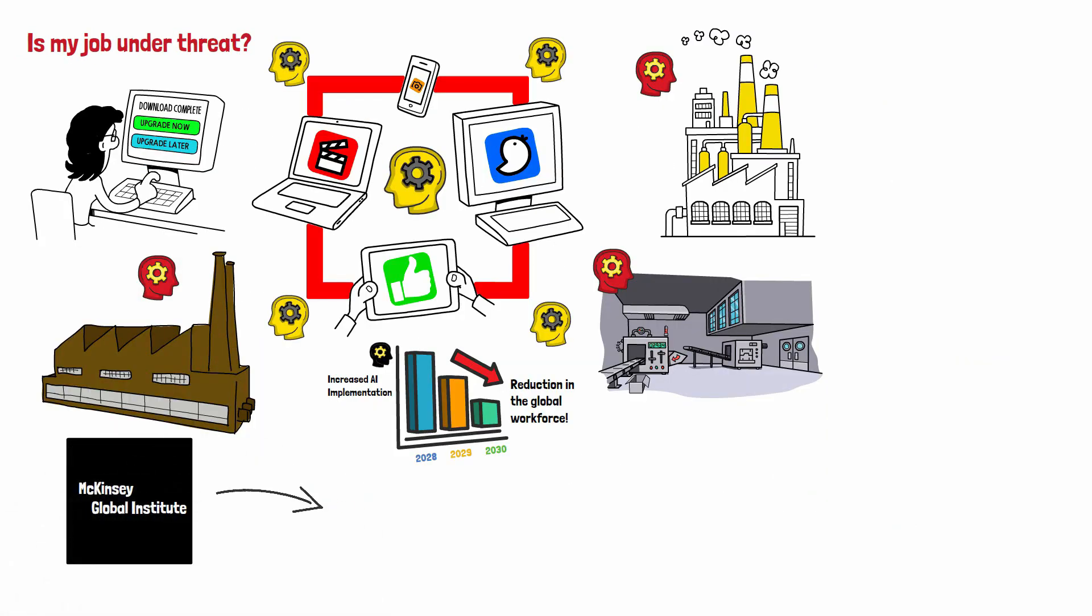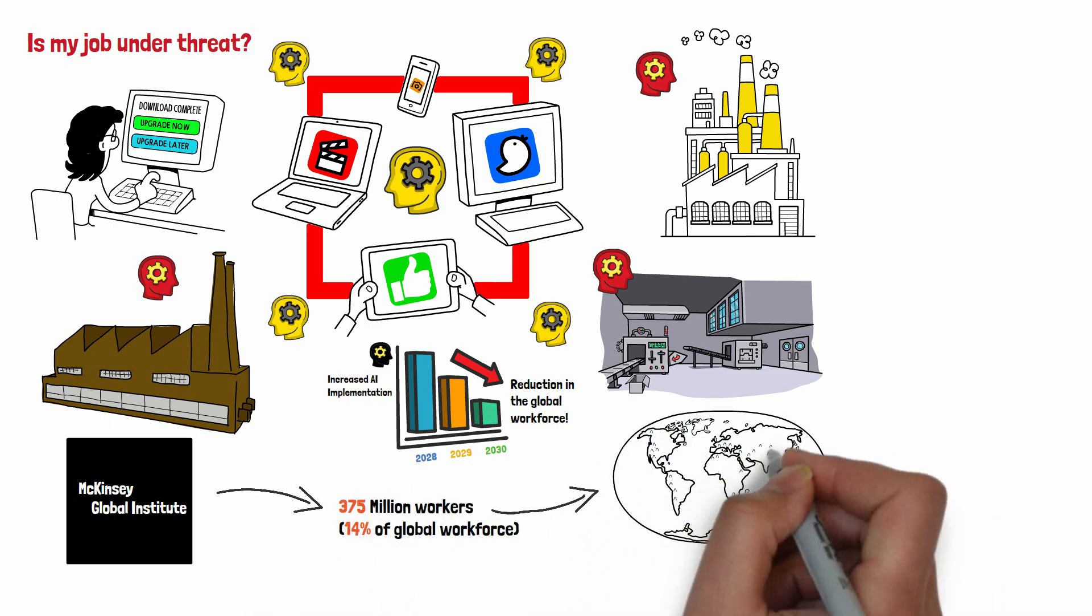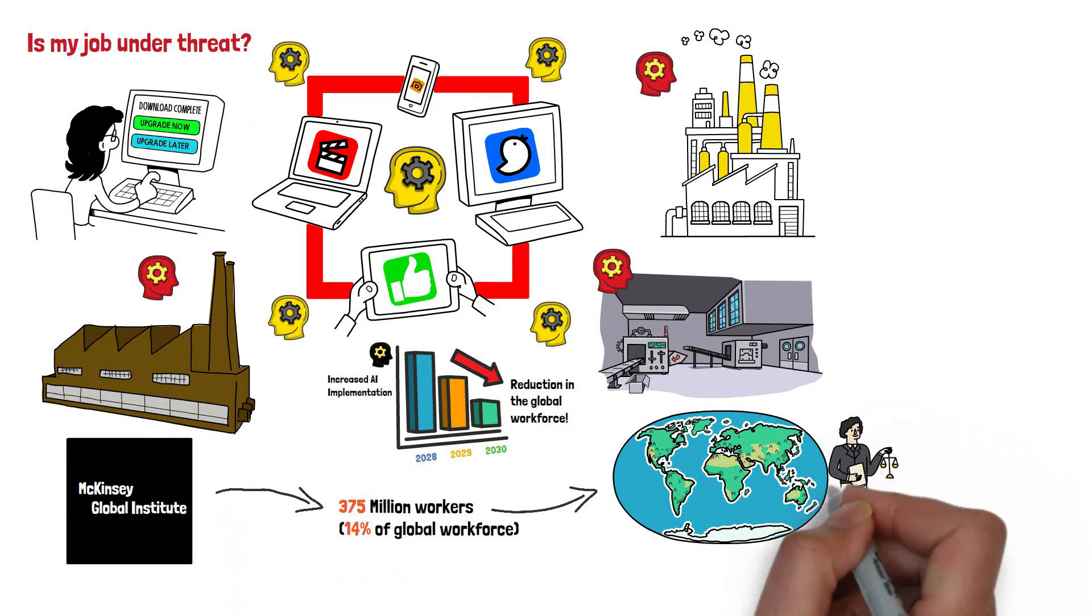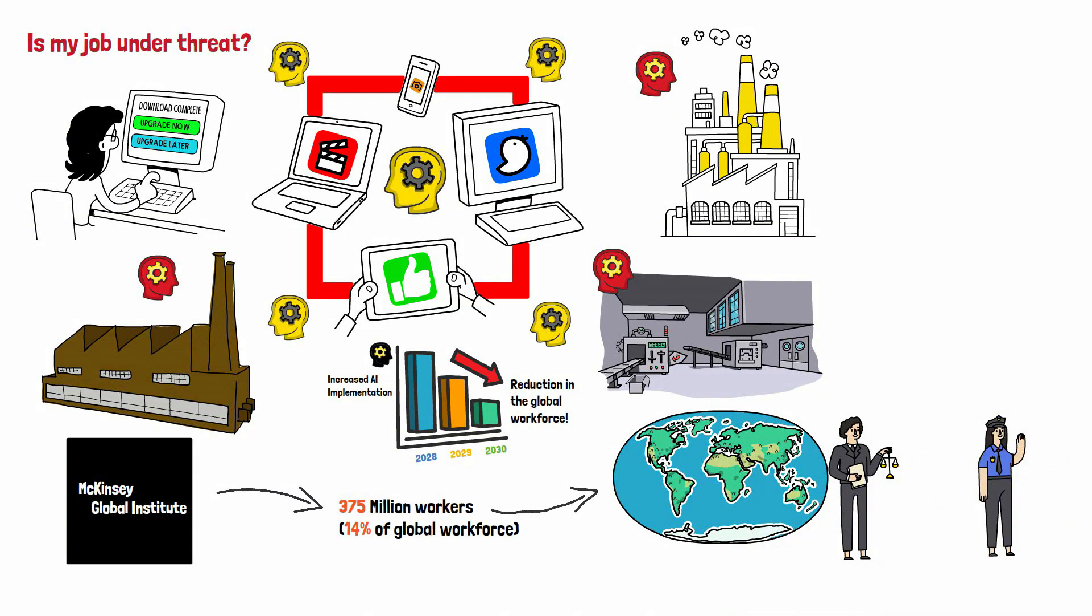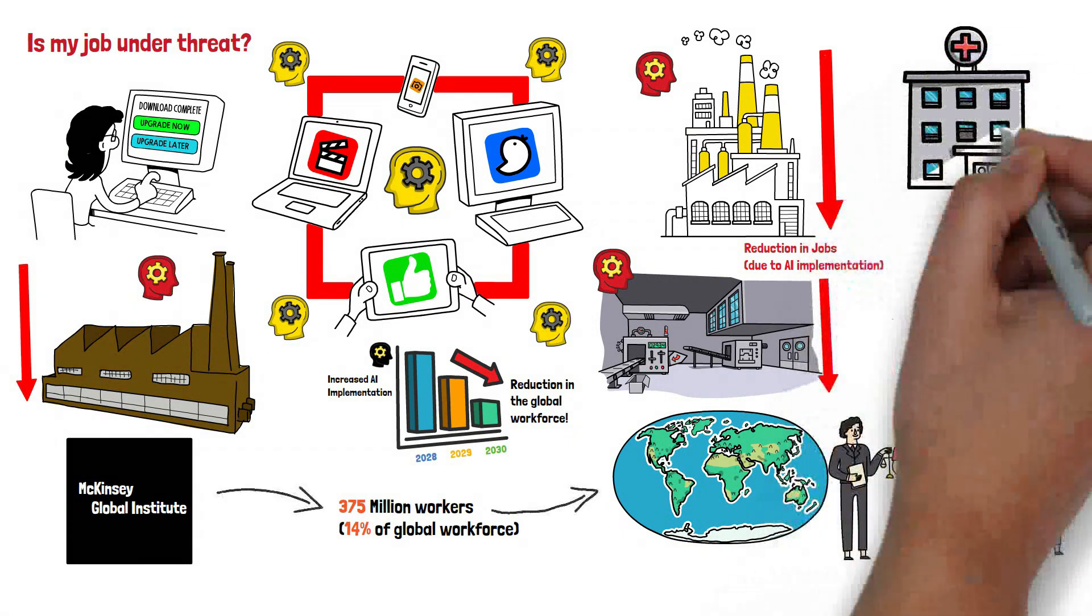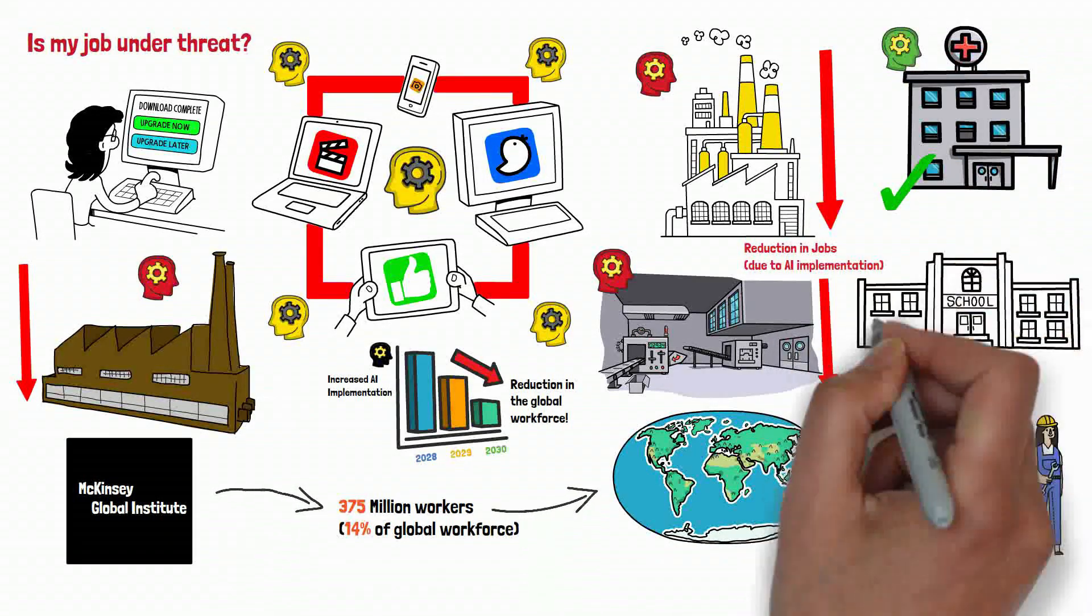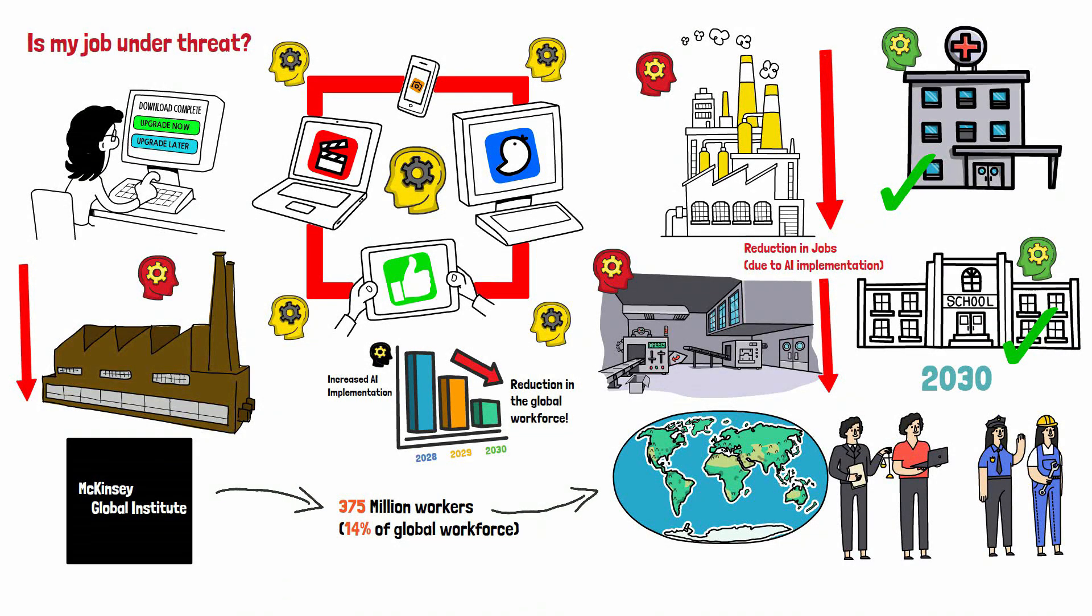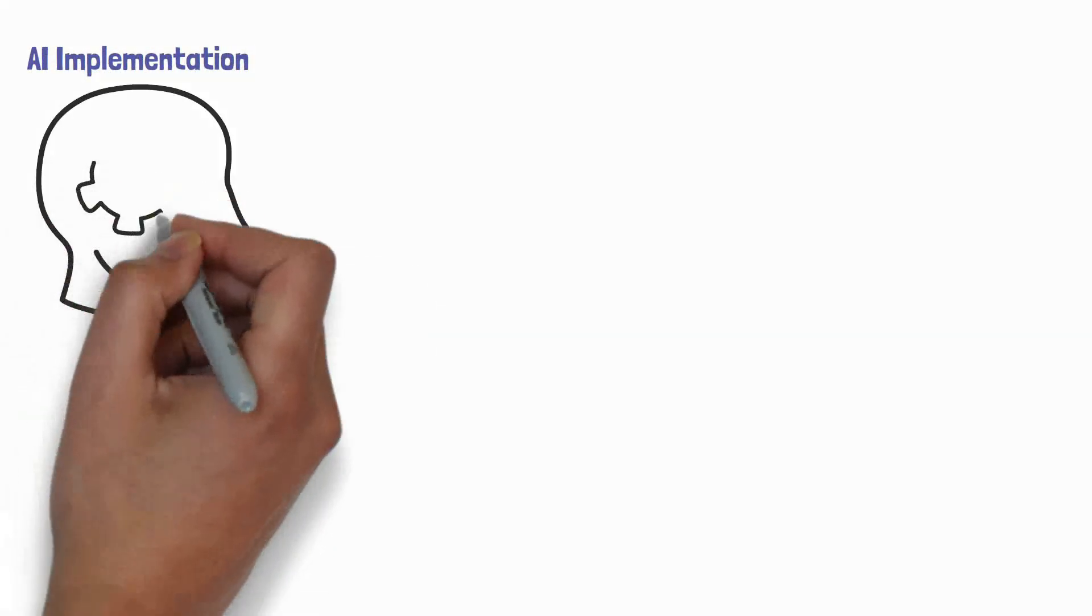For example, a report by the McKinsey Global Institute suggests that up to 375 million workers, or around 14% of the global workforce, may need to switch occupational categories or acquire new skills as a result of automation and AI by 2030. This report also suggests that some industries such as manufacturing and retail could be particularly affected by automation, while other sectors such as healthcare and education may see more limited impacts.